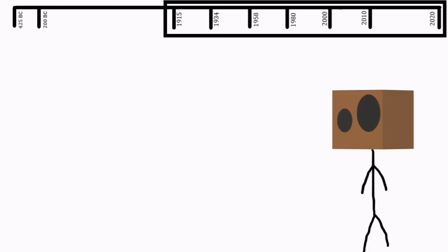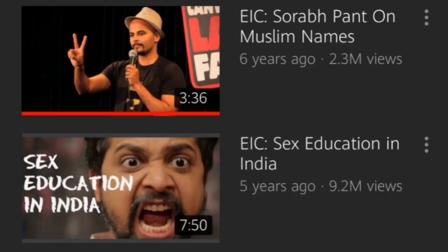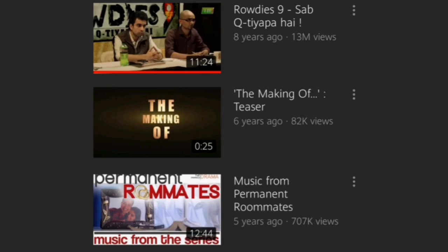Whereas EIC was releasing stand-up videos and raising social awareness issues, TVF started with parodies and then started with the series The Making Of, and soon started making original series.